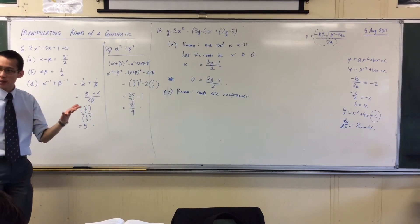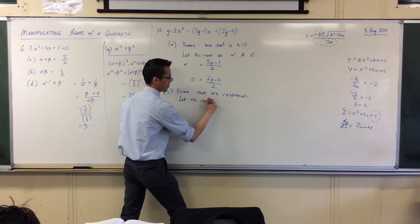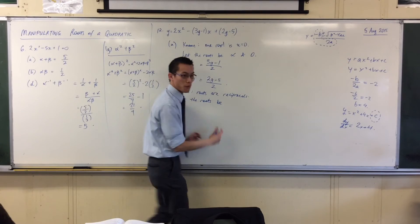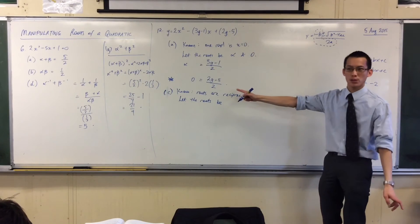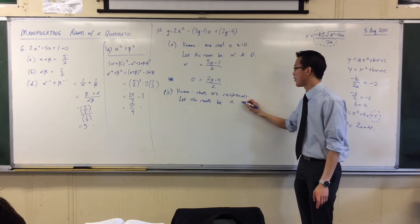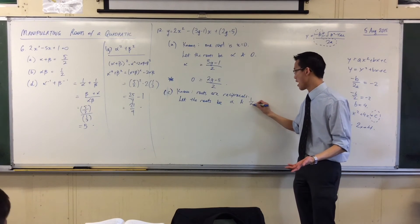If that's the data they give us, then we can assume that the roots be, now, rather than say alpha and beta, which is like, who knows what they are, I know they're reciprocals of each other, so I can say alpha and, what's the reciprocal of alpha? 1 on alpha.